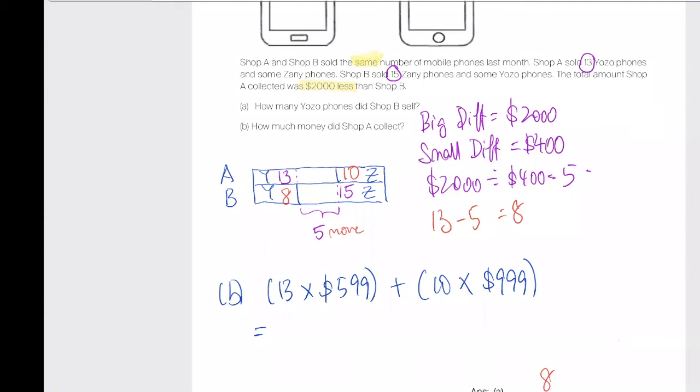Because, you see, they sold the same number of phones. Which means, if you know that Shop B sold 8 Yozo, that means total, Shop B sold how many phones total? Shop B sold 15 plus 8, which is 23. Correct. So if this is 23, and they sold the same number of phones, so therefore, Shop A must have sold 10 Zeny phone phones, because he sold 13 Yozo phones. Make sense?